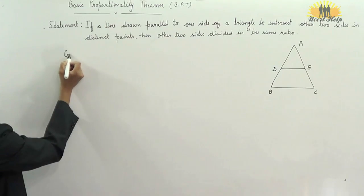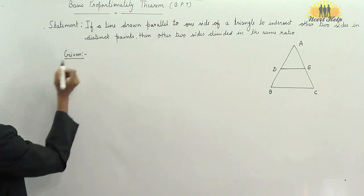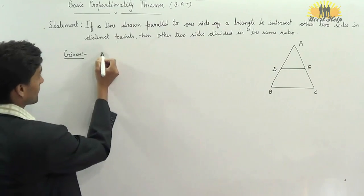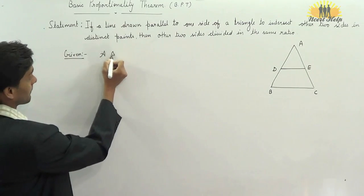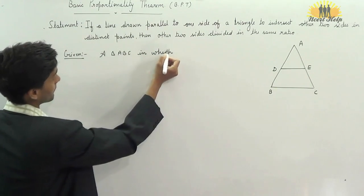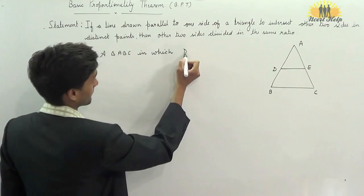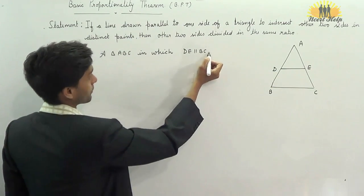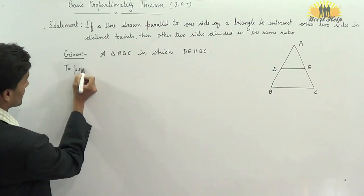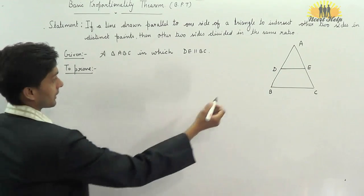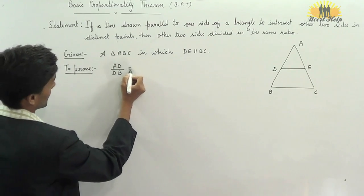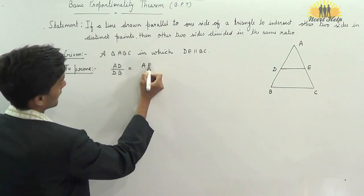Now, write what is given in that theorem. According to the statement, it is given that triangle ABC is given, given a triangle ABC in which DE is parallel to BC. DE is parallel to BC and we need to prove AD upon DB is equal to AE upon EC.